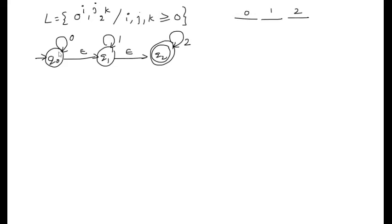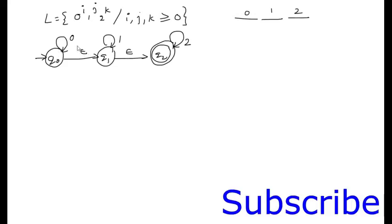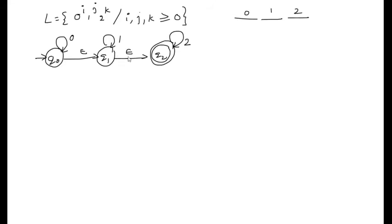Any number of zeros, and then without reading any input symbol, it can reach q1 with the Epsilon transition. q1 on 1 means any number of ones, and after this, without reading any input symbol, with the Epsilon transition it can move to state q2. q2 on 2 moves to itself, and q2 is the final state.